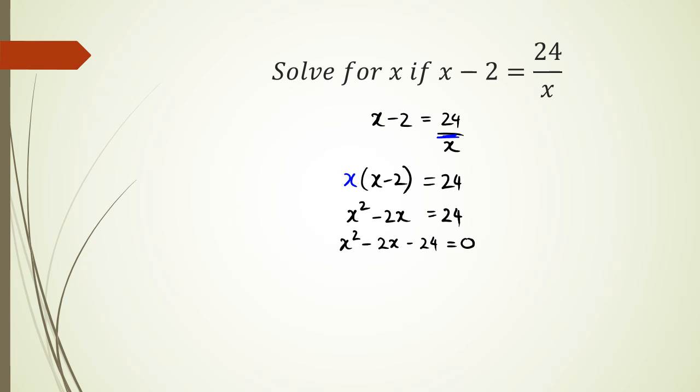So once I'm up to here, I'm looking for two numbers that multiply to negative 24 and two numbers that add to negative 2. And I'm looking for negative 6 and 4, negative 6 and positive 4. So I've got x minus 6 multiplied by x plus 4 equals to 0. So I've either got the green part equals 0 or the red part of the equation equals 0.